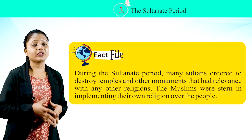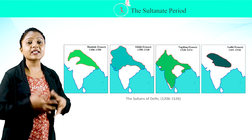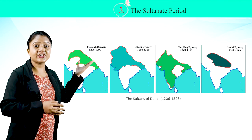These maps explain the extent of the dynasties of the Sultanate period: the Mamluk Dynasty, the Khalji Dynasty, the Tughlaq Dynasty, and the Lodi Dynasty.